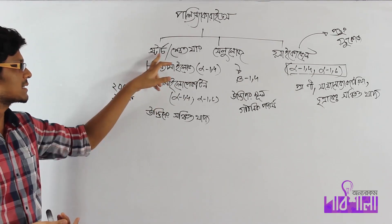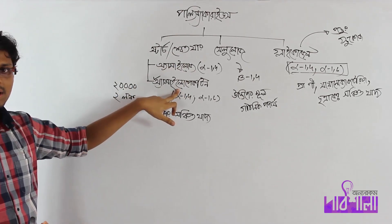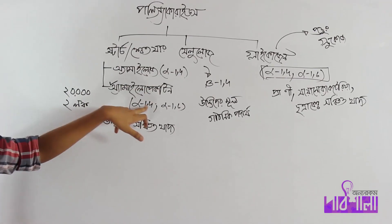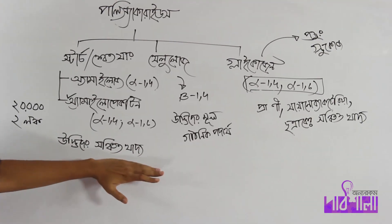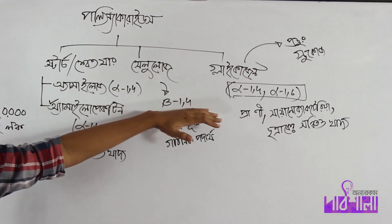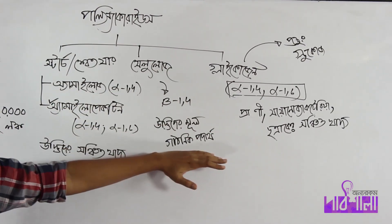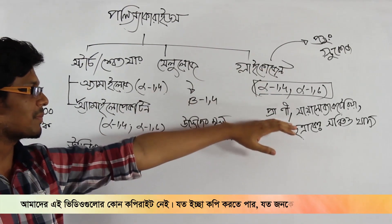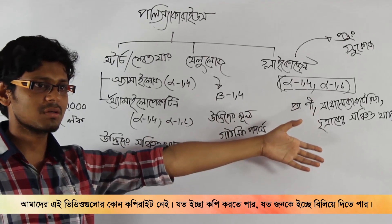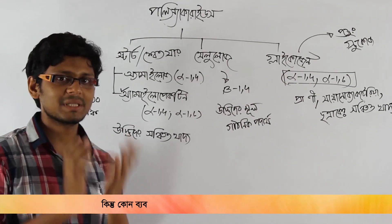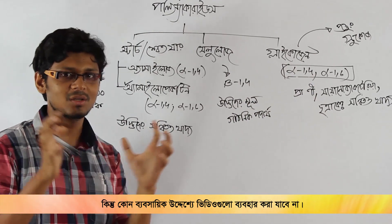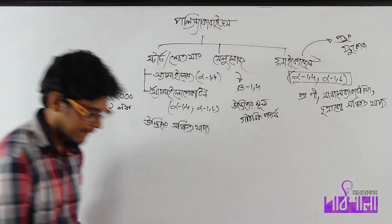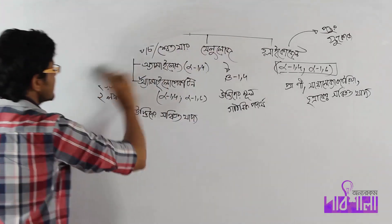Polysaccharide has very many glucose units. Starch is composed of two polysaccharides: amylose with alpha-1,4 bonds, and amylopectin with alpha-1,4 and alpha-1,6 bonds. Cellulose has beta-1,4 bonds. So we have three main structures.